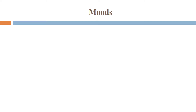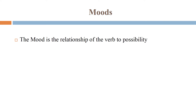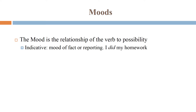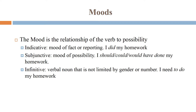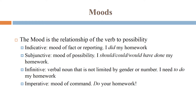Let's look at what moods are. The mood is the relationship of the verb to possibility. The indicative is the mood of fact or reporting — a one-to-one relationship between the verb and possibility: 'I did my homework.' The subjunctive is the mood of possibility: 'I should, could, would have done my homework.' The infinitive is a verbal noun not limited by gender or number: 'I need to do my homework.' The imperative is the mood of command: 'Do your homework.'